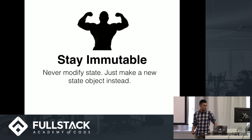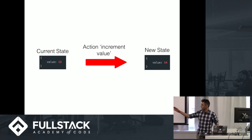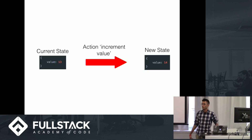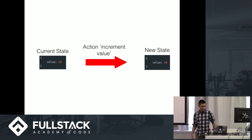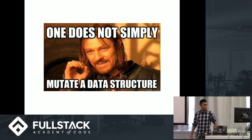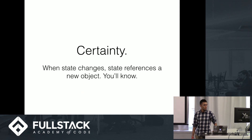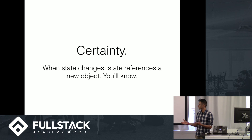The second principle is staying immutable. Basically, you just never modify the state. Whenever you make state changes, those are two different objects. You might ask why — it seems kind of weird to duplicate an object just for one small change. The reason is simply that it's certain: you can know for sure that these are two different states, and there's a lot you can do off of that.